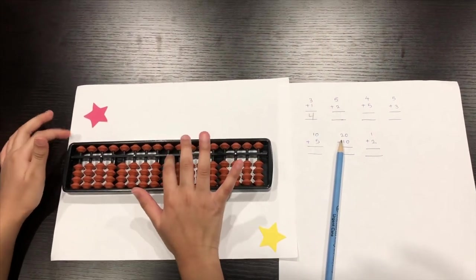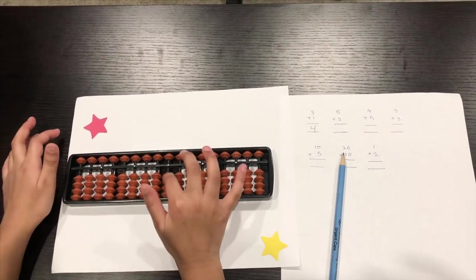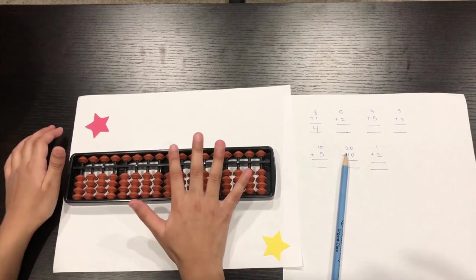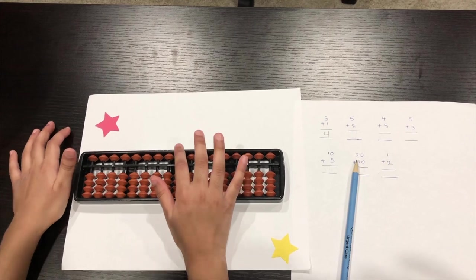So remember I told you this is the unit dot, right? So in the unit dot, this rod of these beads, these beads equal one count. And on top of this, only because it's one bead, it equals five counts.